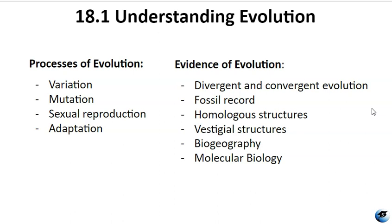There is substantial and compelling evidence for evolution across various levels of biological organization. Fossils provide evidence of organisms that differ from those found today and reveal gradual evolutionary changes over time. By dating and categorizing fossils, scientists can establish the chronological order of organisms. Homologous structures demonstrate common ancestry through similar anatomical features in different species. Vestigial structures, such as your appendix or tonsils, are remnants of ancestral traits with no current function. Biogeography shows how species' geographic distribution is influenced by historical connections. Molecular biology reveals shared DNA sequences, indicating genetic relationships and evolutionary connections.